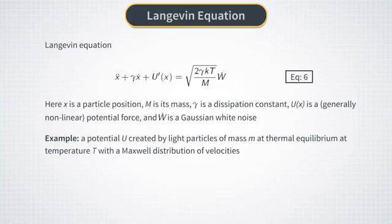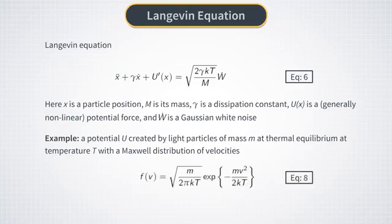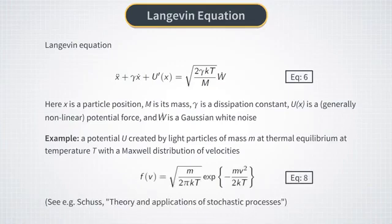The light particles are at equilibrium at temperature T and have a Maxwell distribution of their velocities v, given by equation 8 here. And it turns out that analysis of such system yields directly the Langevin equation. You can find more details about it in the book by Zev Schuss, cited on this slide.